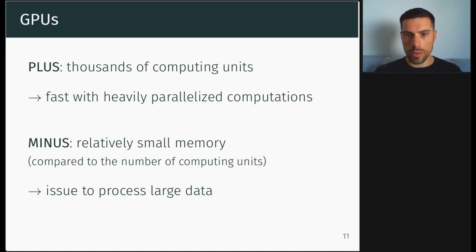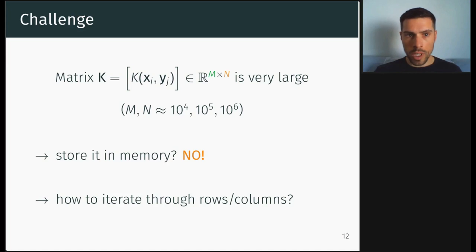They're made of thousands of computing units, so they're very fast with heavily parallelized computations. The problem is that the amount of memory available for each computing unit is very small, so you have some issues to process very large data. And the challenge is that the kernel matrix K can be very large, up to millions times millions, and it is not possible to store it in the GPU memory. Sometimes it is bigger than the GPU memory. So you have to be smart about how you iterate through the rows and columns to do the reduction and to compute the kernel matrix and then do the reduction.